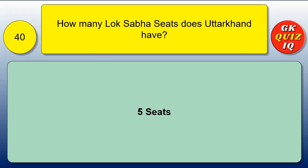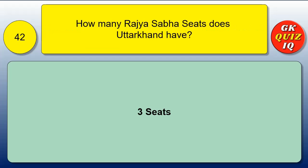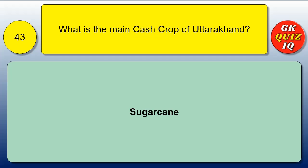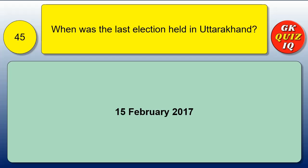How many Lok Sabha seats does Uttarakhand have? Five seats. How many seats are in Uttarakhand Vidhan Sabha? 70 members. How many Rajya Sabha seats does Uttarakhand have? Three seats. What is the main cash crop of Uttarakhand? Sugarcane. What is the emblem of Uttarakhand? Diamond Shield. When was the last election held in Uttarakhand? February 2017.